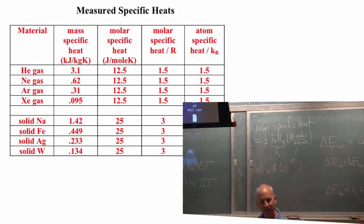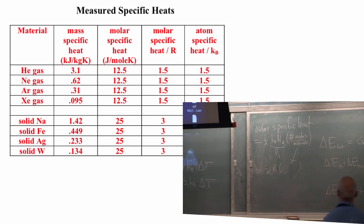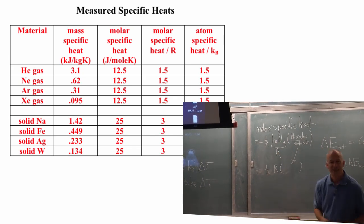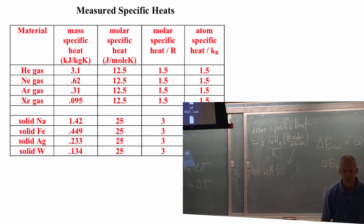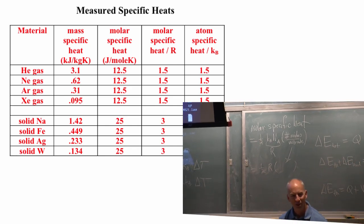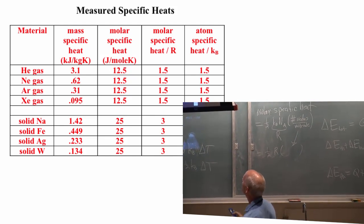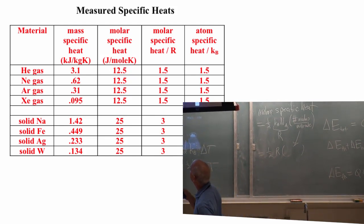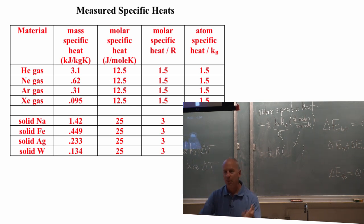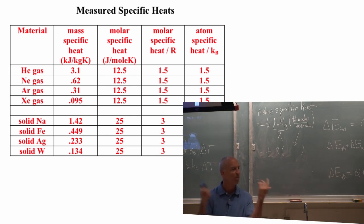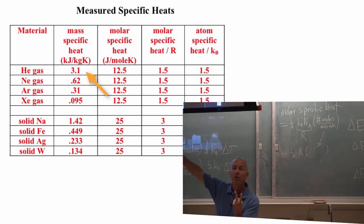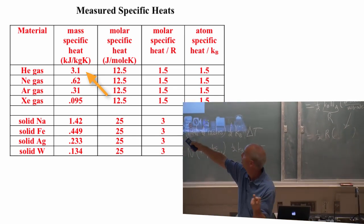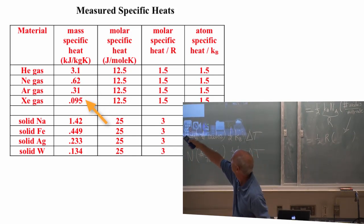Student: You're using R as 2 something? Instructor: I'm using R as Boltzmann's constant times NA, and it's, what is it? It's like 8.3 or something joules. I can't remember what R is. Student: 3.1 by 8 whatever, what? Instructor: Yeah, this is mass specific heat. The weird thing about mass specific heat is it depends on how many protons and neutrons are in the nucleus, and that could be anything.